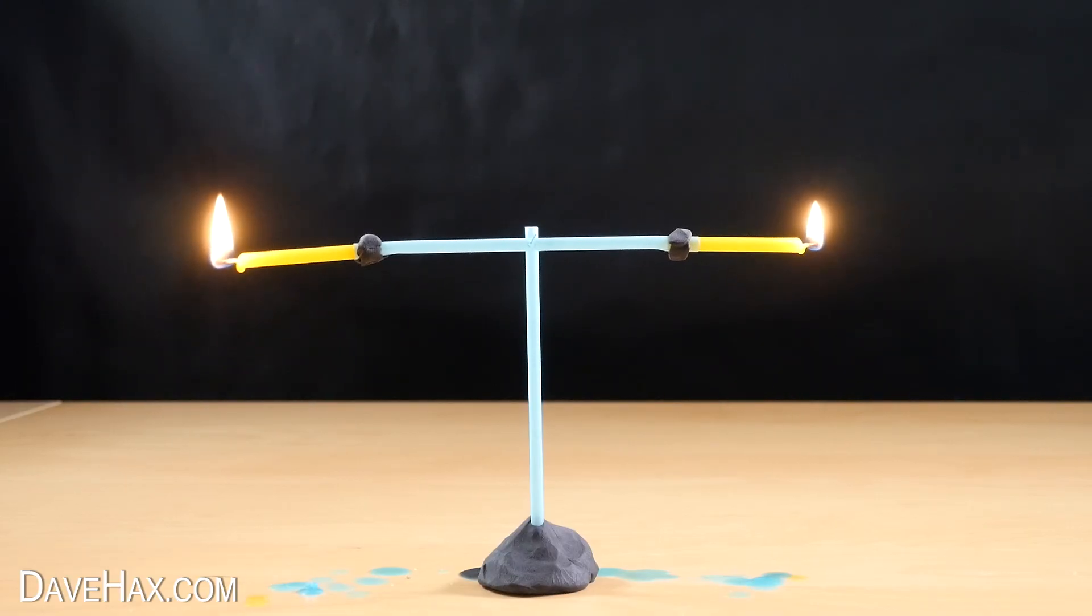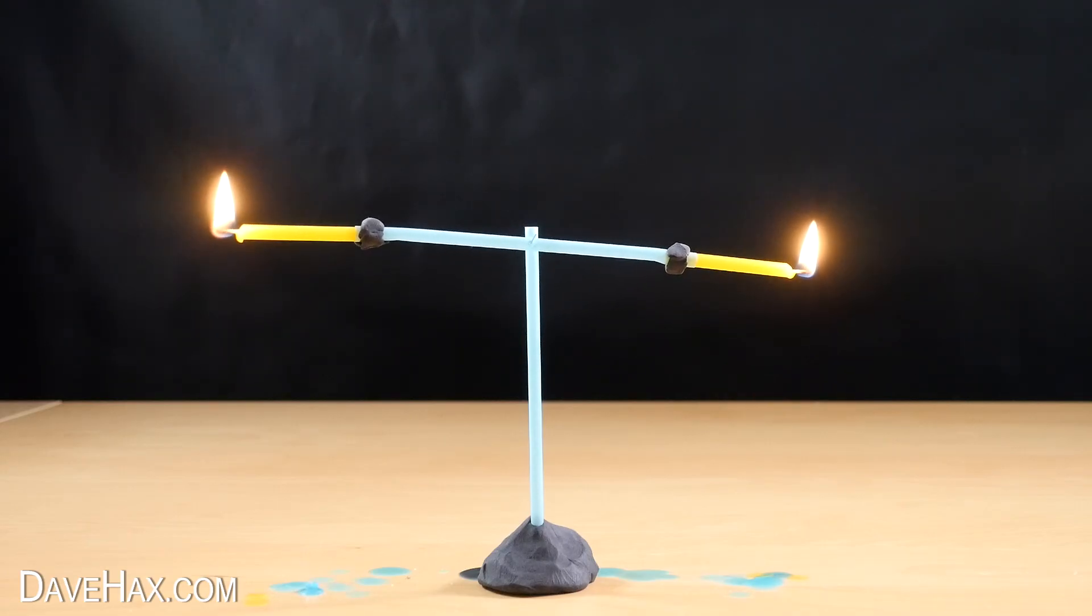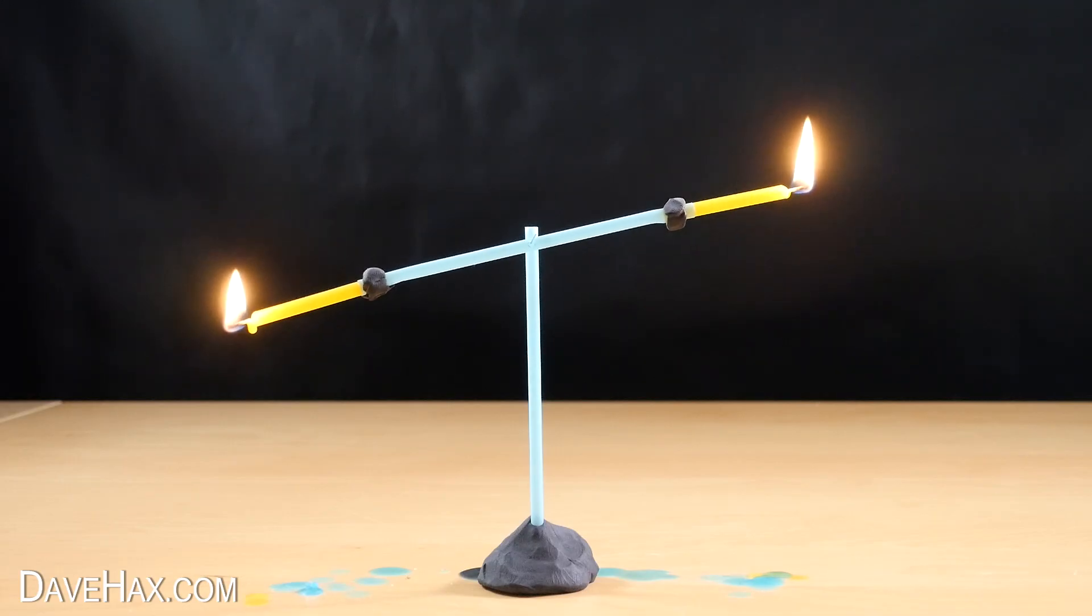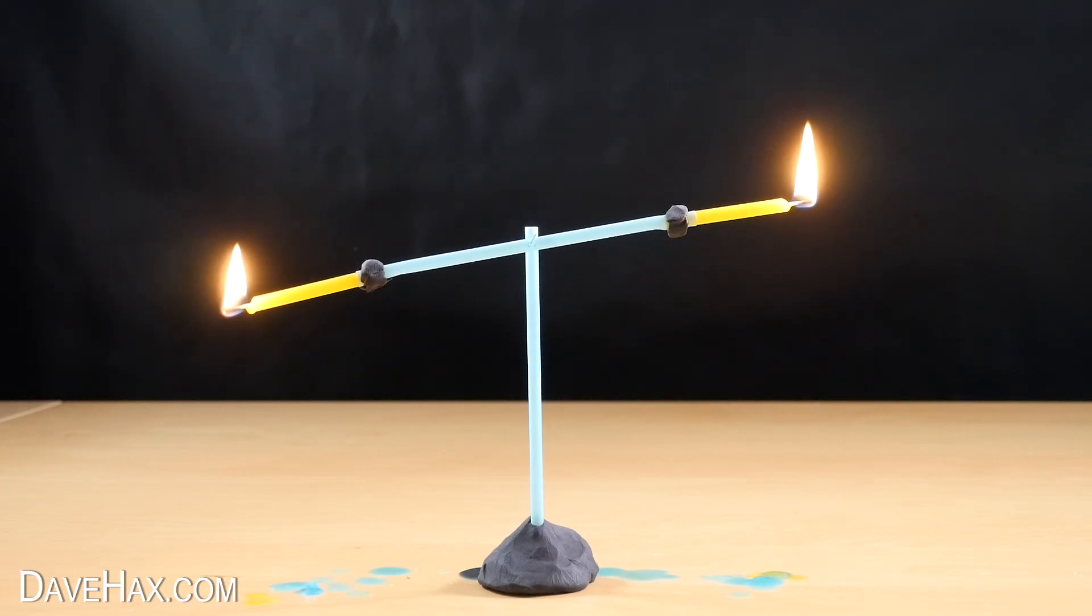And it worked far better. As one candle gets shorter and lighter it rises to the top and waits for the other one to melt.